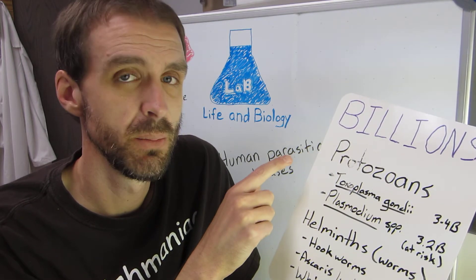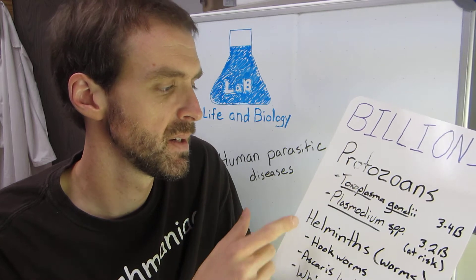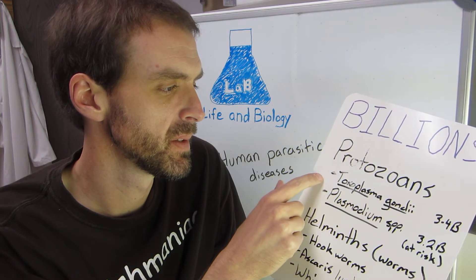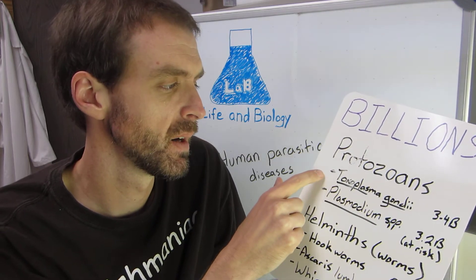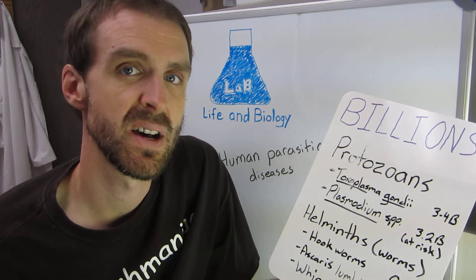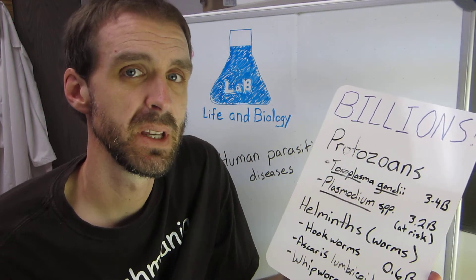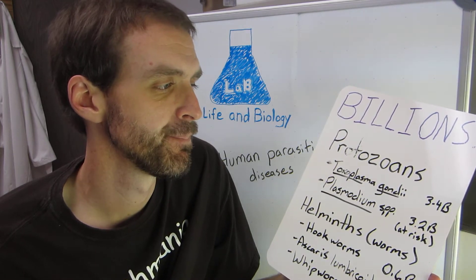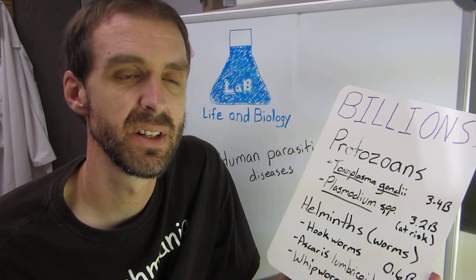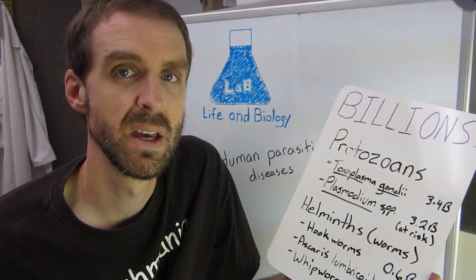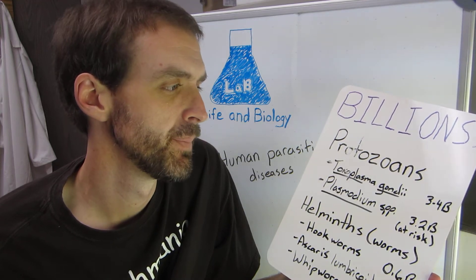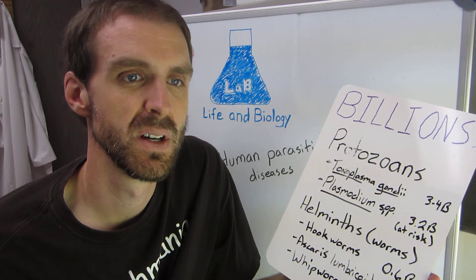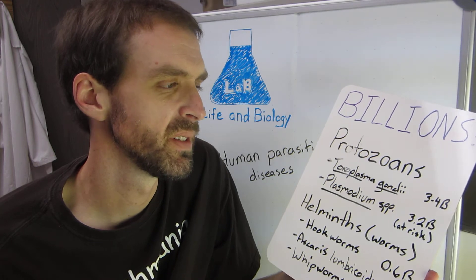The two major categories of endoparasites in humans are protozoans and helminths. Just to give you an idea how common these are — Toxoplasma gondii, which causes toxoplasmosis, roughly three to four billion people in the world have this, with some countries as high as 95% of people. Some of that is due to sanitation, but some is also due to things like eating raw meat. When I was in Ethiopia, one of the favorite foods was a raw beef meal called kitfo.